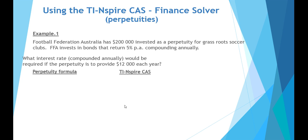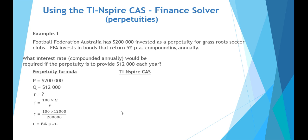What interest rate compounded annually is required if the perpetuity is to provide $12,000 each year instead of $10,000? The principal is again $200,000, the payment is $12,000 per annum, and we want to calculate the annual interest rate. Because payments and compounding are both annual, we can substitute into the perpetuity formula to find a required interest rate of 6% per annum.